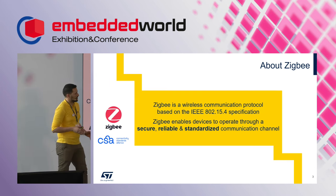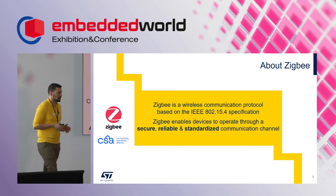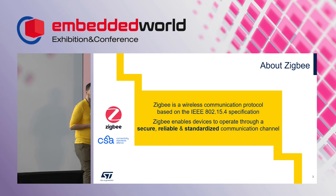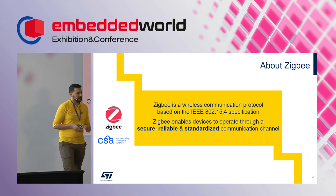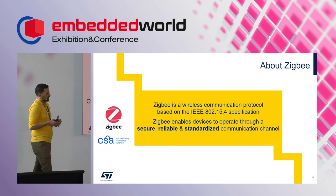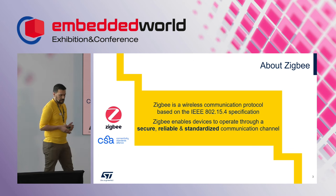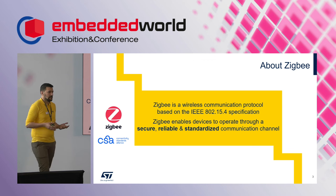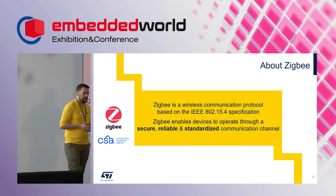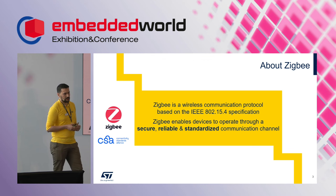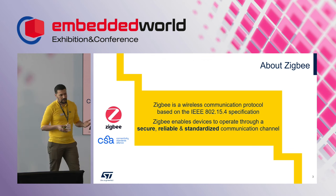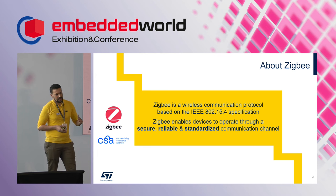So what is Zigbee? Basically, Zigbee is a communication protocol based on the IEEE 802.15.4 specification. It is a network protocol that enables devices to communicate securely and reliably through a standardized protocol. We can think of Zigbee as a complete stack solution, meaning it defines and includes all the layers required to build your IoT solution from the ground up — from the MAC layer, network layer, application layer, to the cluster library.